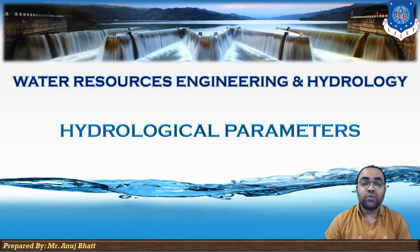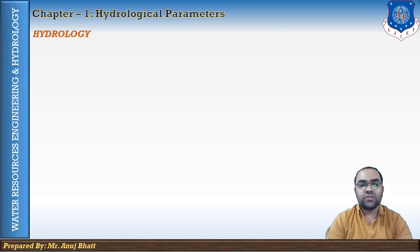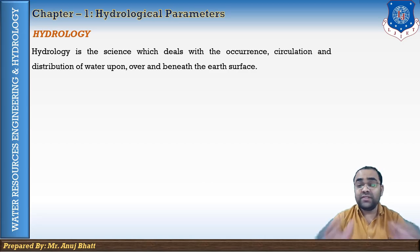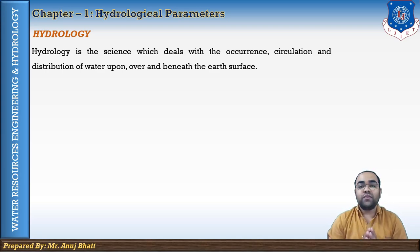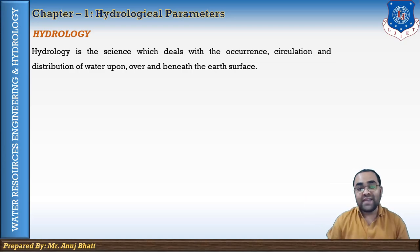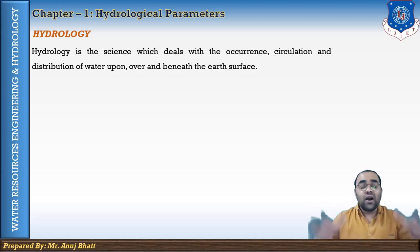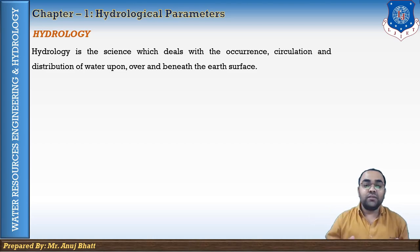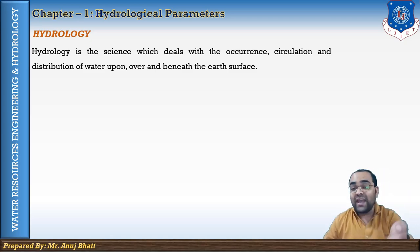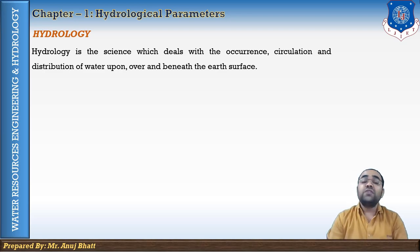What is hydrology? Hydrology is the science which deals with the occurrence, circulation and distribution of water that is upon, over, or beneath the earth's surface. It is a kind of science which deals with the water available on the earth — it can be over the earth surface, upon the earth surface, or beneath the earth surface. It is the science concerned with the transportation of water vapor through the air.